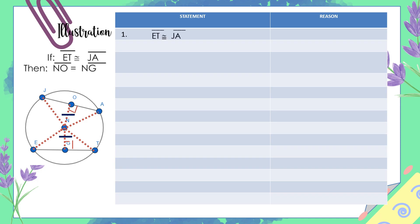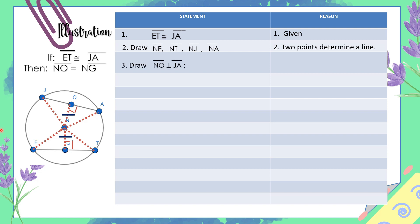Now let's prove. First statement: segment ET is congruent to segment JA — given. Draw NE, NT, NJ, and NA because two points determine a line. Segment NO is perpendicular to segment JA, and segment NG is perpendicular to ET, because the shortest distance from a point to a line is the perpendicular distance.